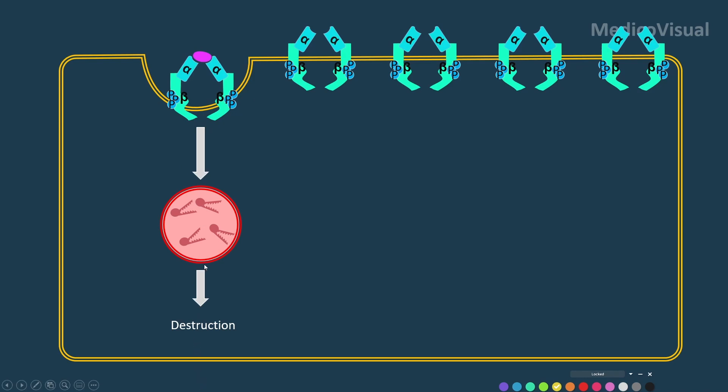Now imagine that lots of insulin are released — for example, in insulin resistance, too much insulin is released — and this insulin will be binding to more and more of its receptors. Initially, very few receptors